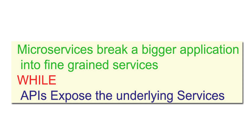On the other hand, if we talk about APIs, APIs are exposing the underlying services. APIs are not implementing the functionality itself; rather, APIs are acting as a wrapper, they are acting as a gateway, they are acting as an interface — as the name suggests, Application Programming Interface. So they are an interface and they are going to expose the underlying services, and in that way they are getting a relationship with microservices that we are going to talk about further in this video.